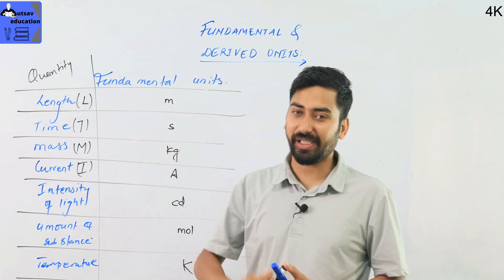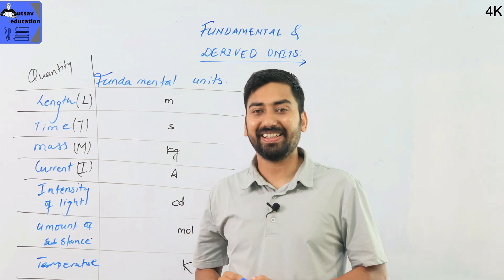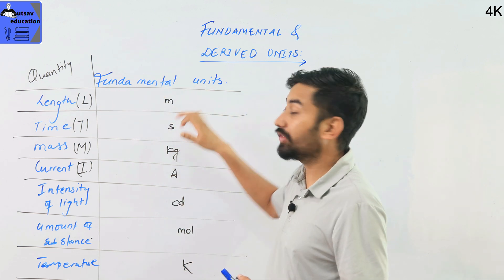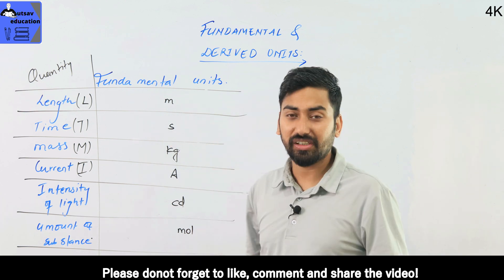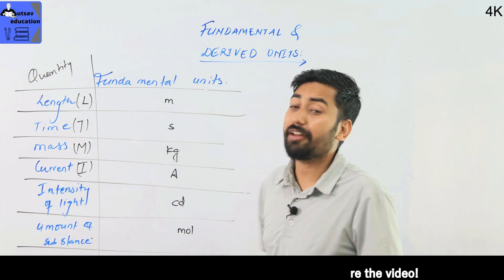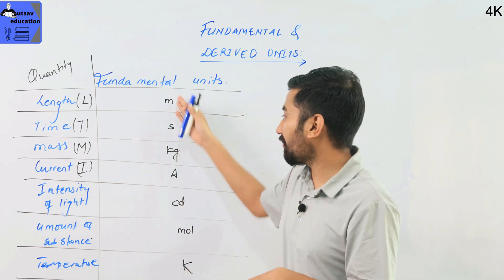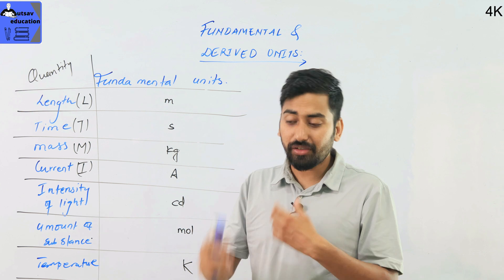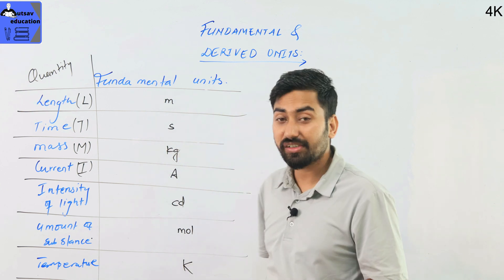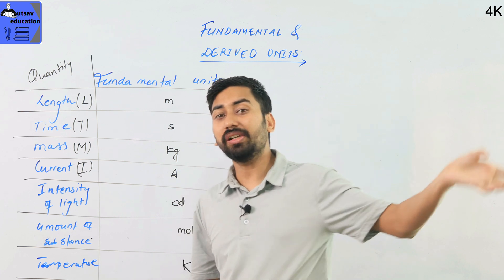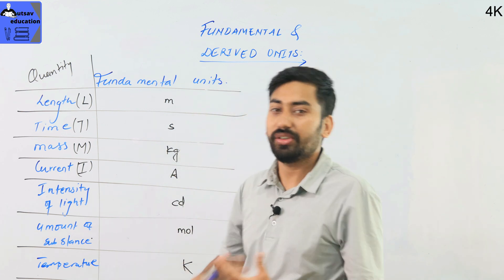The meter is used to express length. You cannot resolve it into any other simpler form. This meter is a fundamental part — if you try to resolve it further, it remains at the fundamental level. So the fundamental units cannot be broken down further, whereas the derivative units can be resolved using the fundamental units.